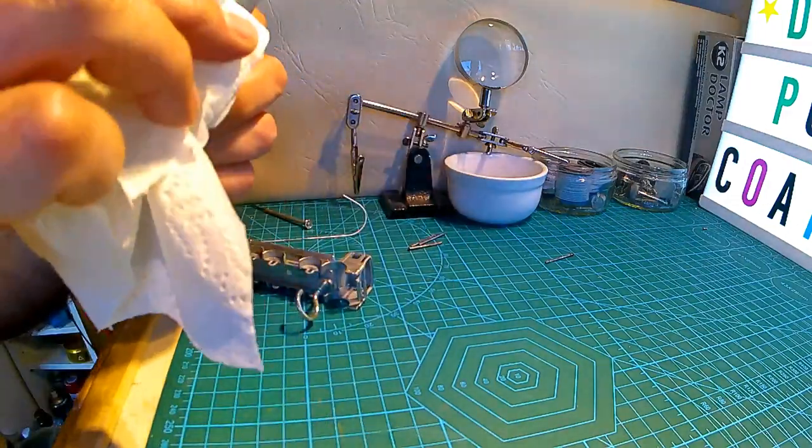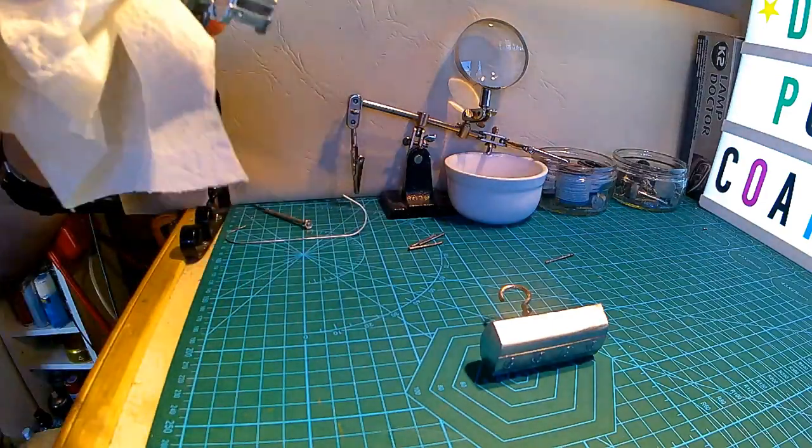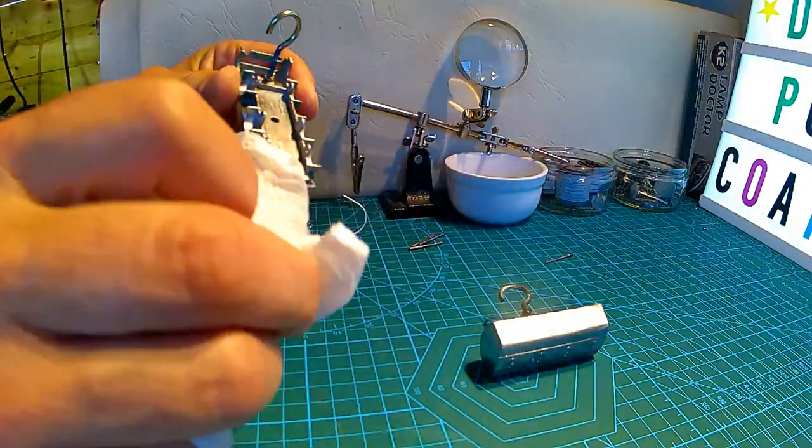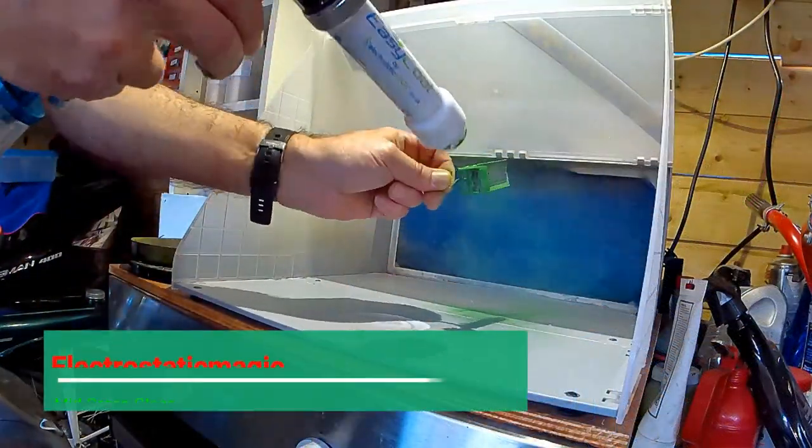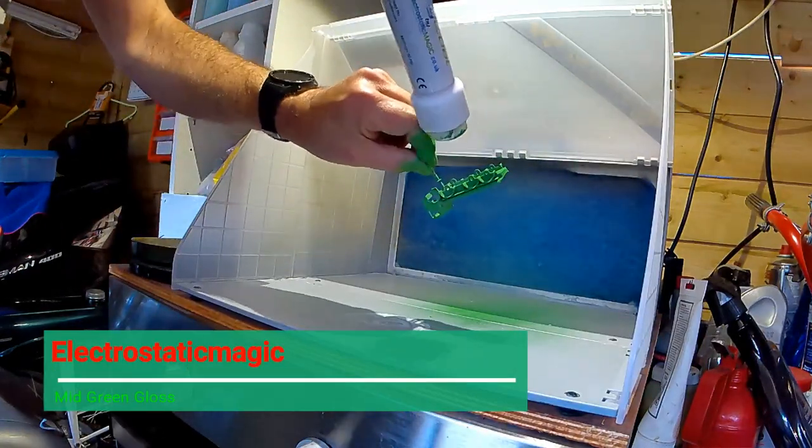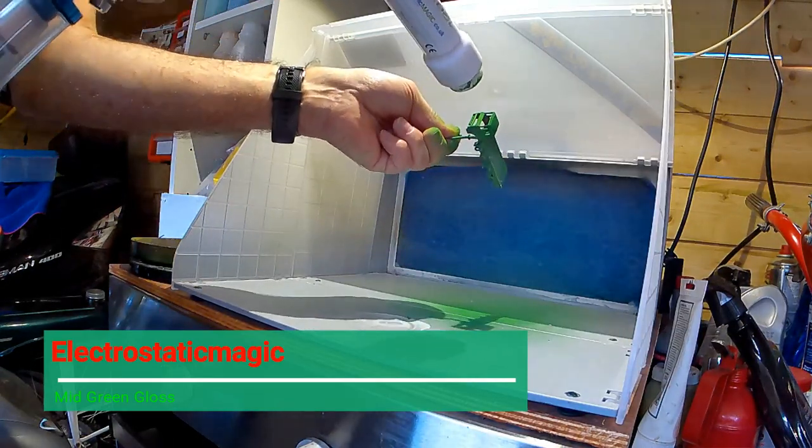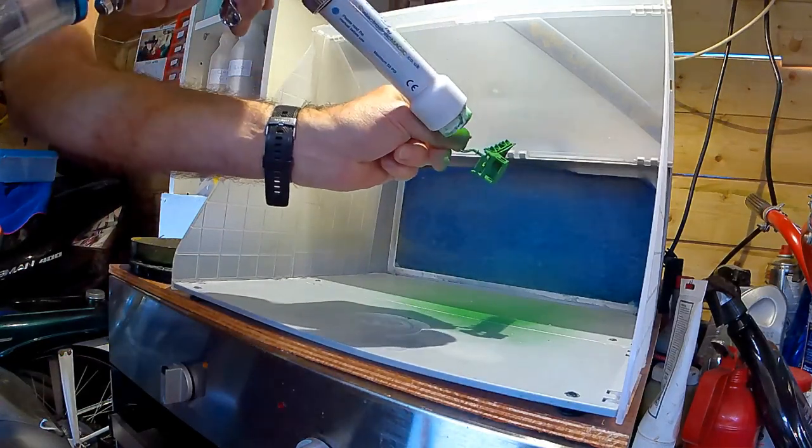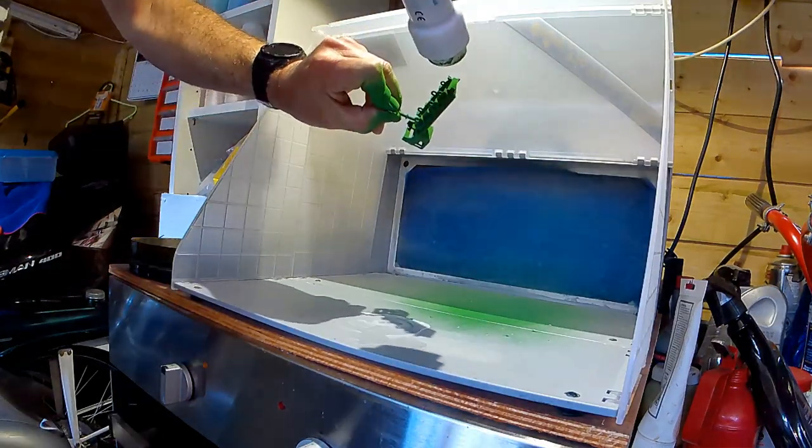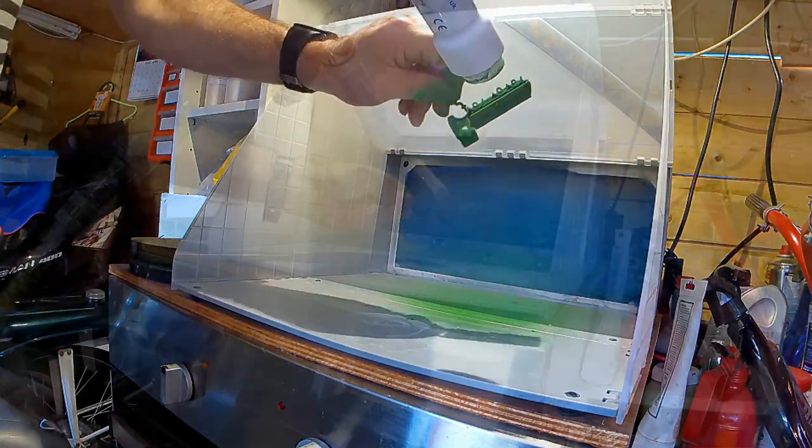And back from the oven now, another quick wipe over with some acetone. So we can start powder coating now. I'm using the Electrostatic Magic mid-green, very light dusting once again so we don't lose any of the detail.